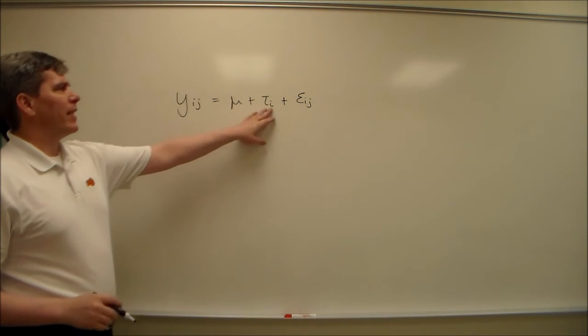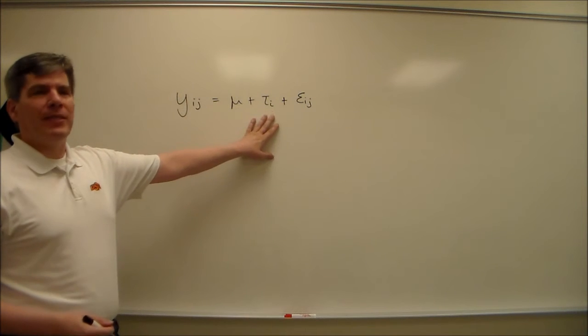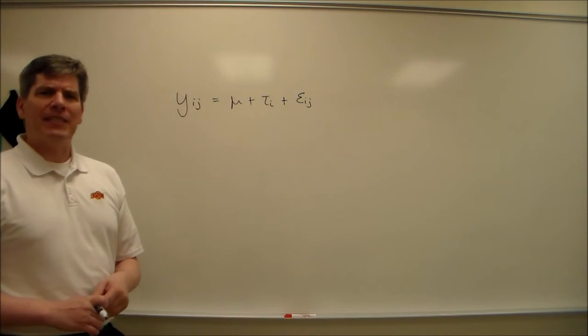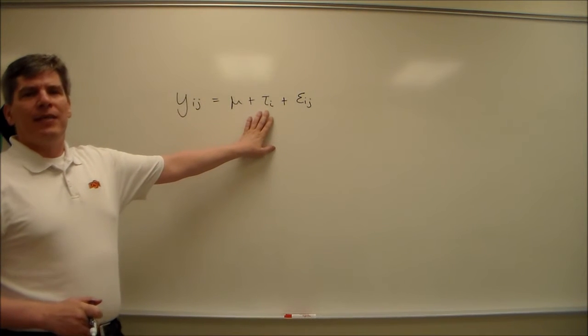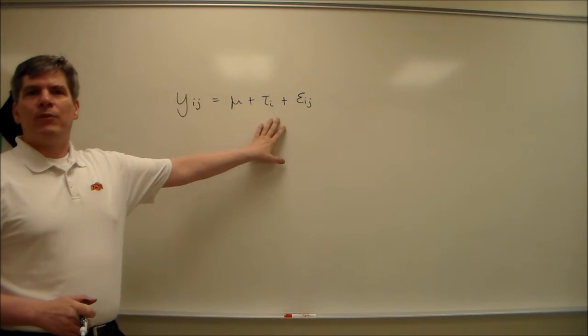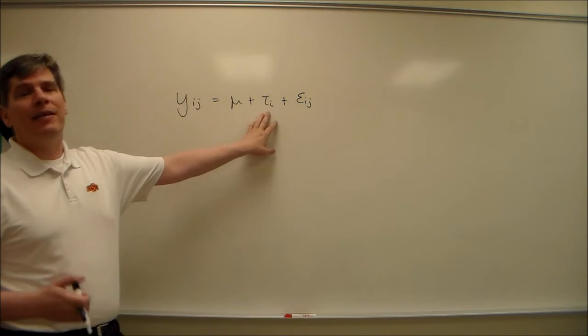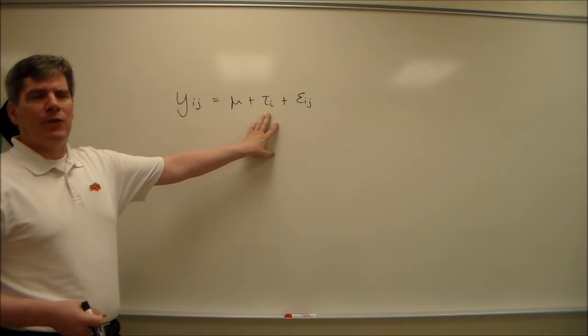It's one way because there's only one independent variable, there's only one set of treatments. The way the book has this, the only way you know that this is fixed effects is because I told you. In a lot of sources, fixed effects will have Greek letters and random effects will have Latin letters. So this would be a T if it were a random effect.